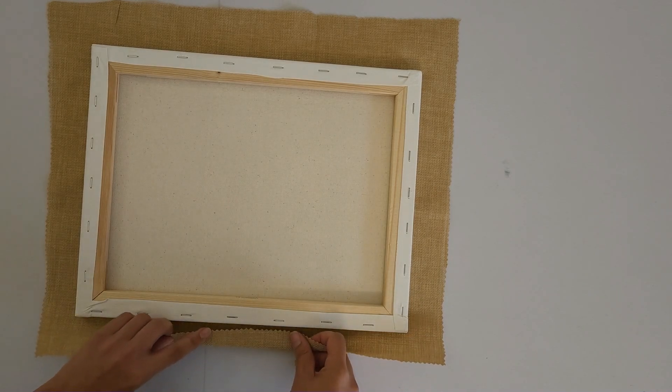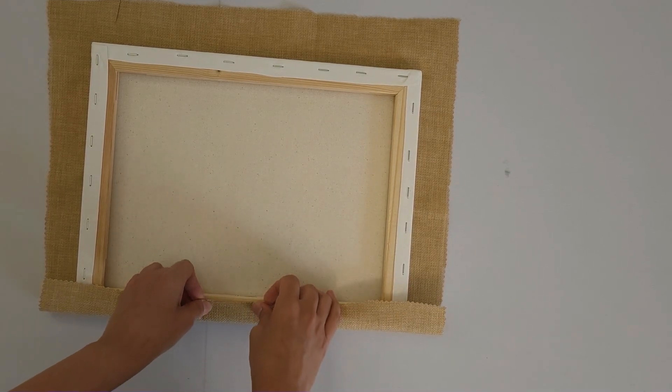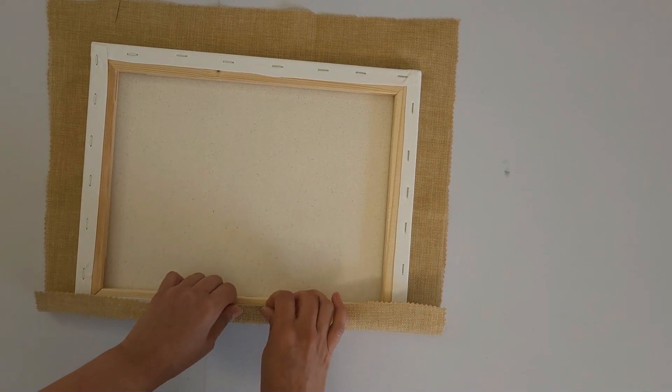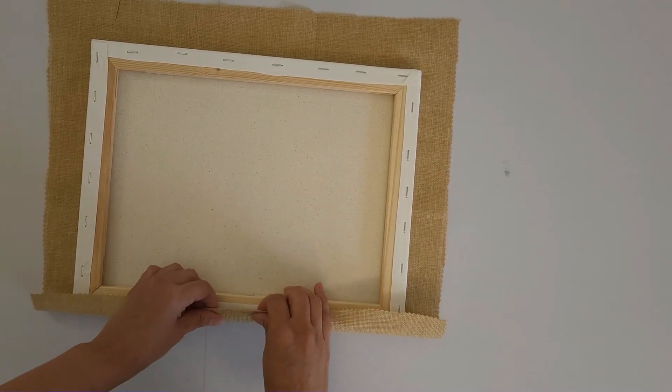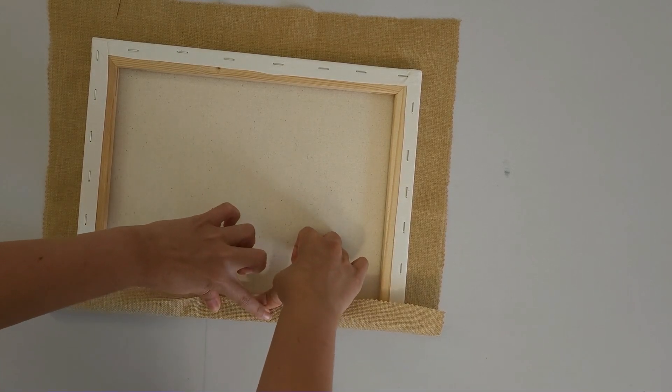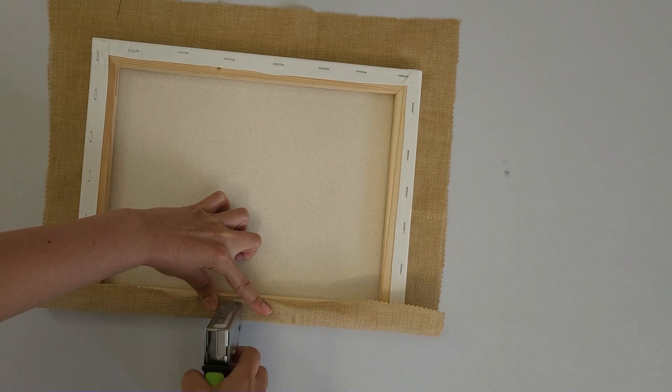So when we staple I like to fold over a little bit. And then pull it over so you don't have the raw edge exposed. So I'm going to do the middle on each side. So we folded it and then I'm pulling a little bit on the fabric so it does get tight.